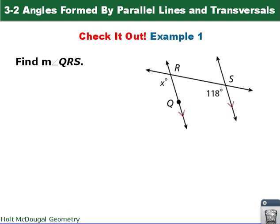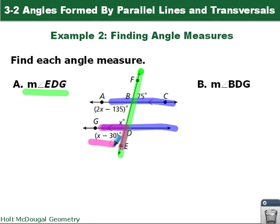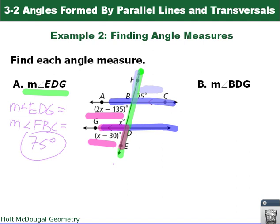Now it's your turn to use the postulate or theorems to find the measure of angle QRS. In example 1, we again have parallel lines — indicated by the parallel line markers — and a transversal. We're asked for the measure of angle EDG. EDG is a corresponding angle to another angle, but it's also an alternate exterior angle to angle FBC. Using the alternate exterior angles theorem, the measure of angle EDG equals the measure of angle FBC, which is 75 degrees.